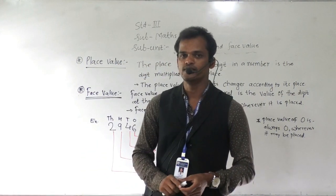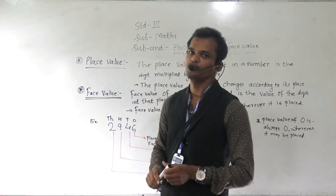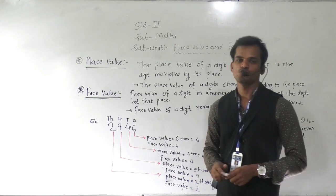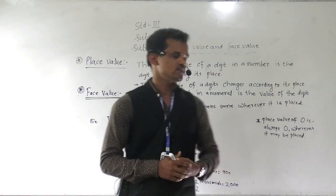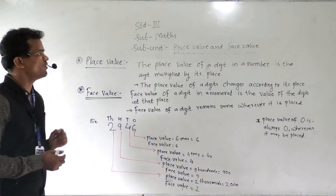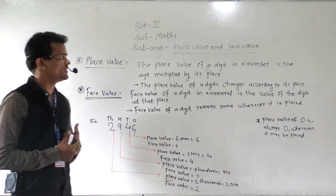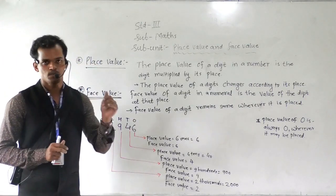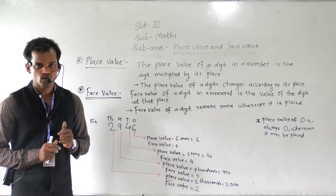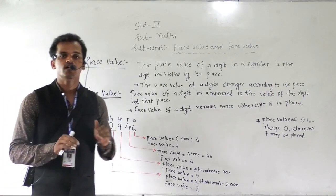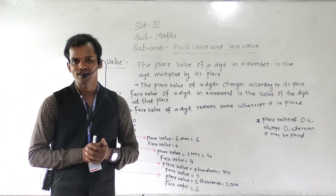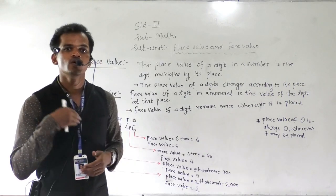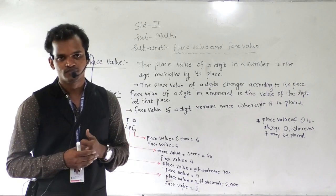Today we will see place value and face value. What is meant by place value? The place value of a digit in a number is the digit multiplied by its place. So place value depends on the place and it changes according to the places.